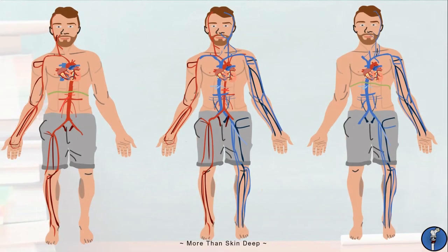Now you've covered most of the major veins and arteries that exist in the human body. Here they are all together so you can see how they relate to one another. If you enjoyed this tutorial, please remember to subscribe to the channel and leave a comment for what you'd like to see us cover next.